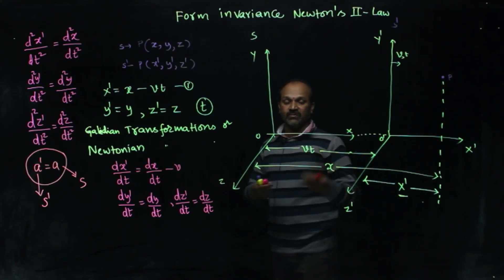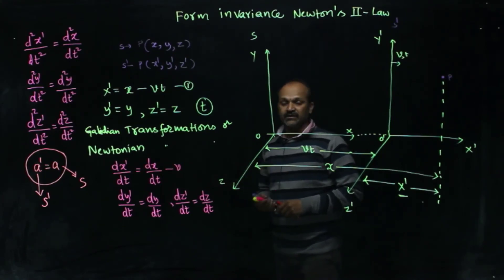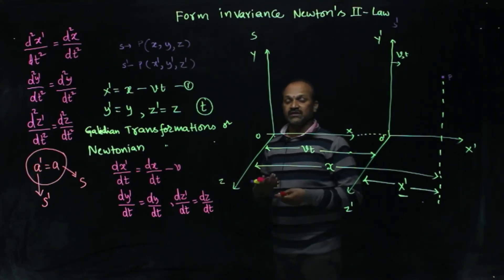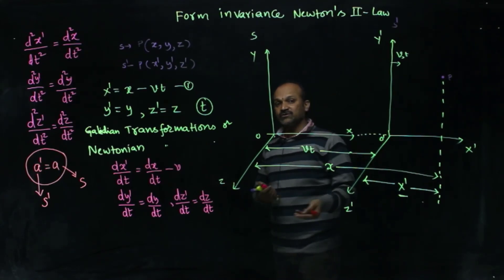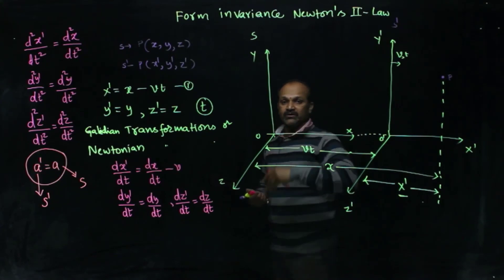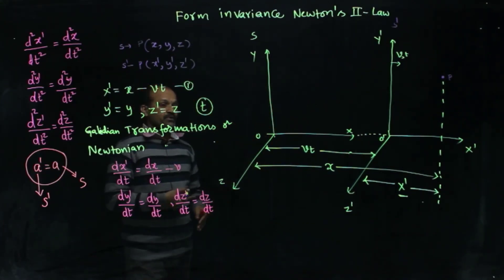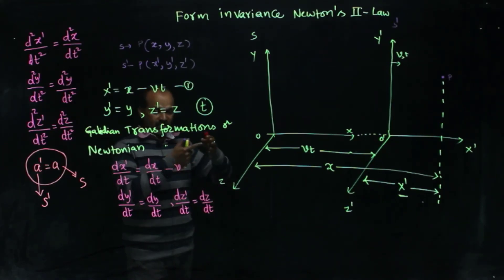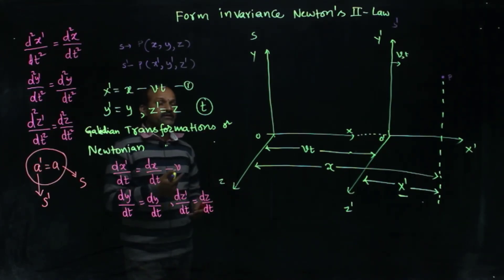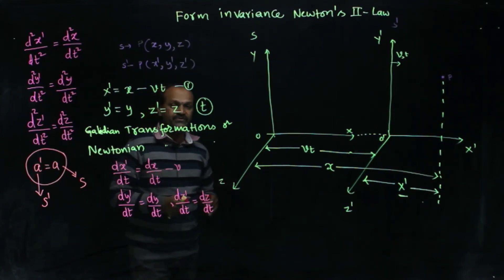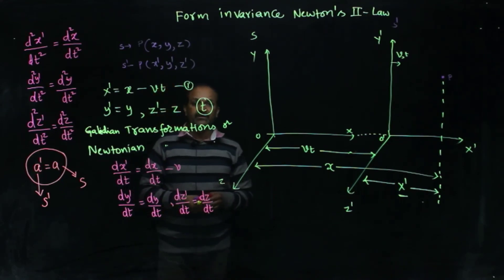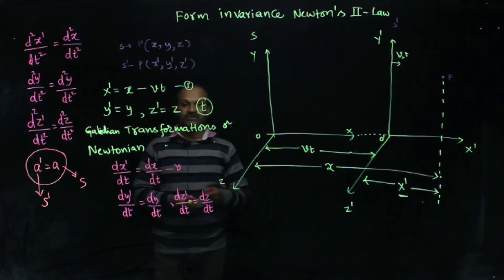Acceleration is the same, and if you multiply with mass, Ma-dash equals Ma — that is force. The forces experienced by that particle, calculated with respect to two frames of reference traveling linearly with respect to each other, are the same. The force calculated on the system with respect to the two reference frames is same. This is form invariance. Thank you. If you have any doubts, you can write in the comment section. We will continue with one more topic in the next video.